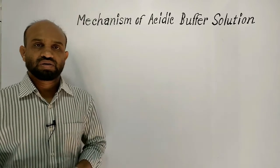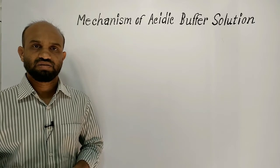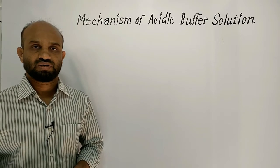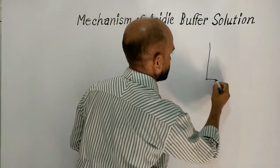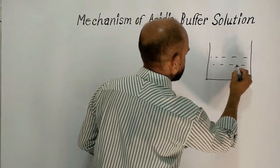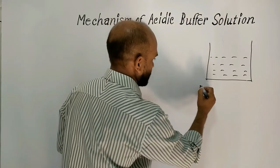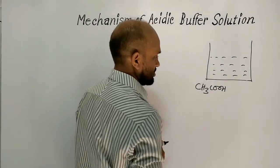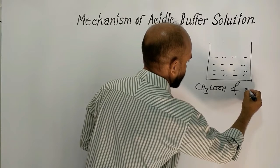Let's consider an acidic buffer solution of a weak acid — specifically acetic acid — and its basic salt, sodium acetate. This is the solution of an acidic buffer solution where the acid is acetic acid, a weak acid, and its basic salt is sodium acetate.